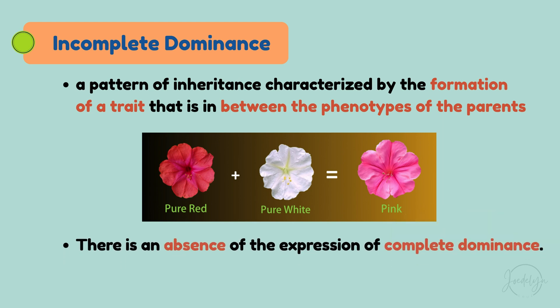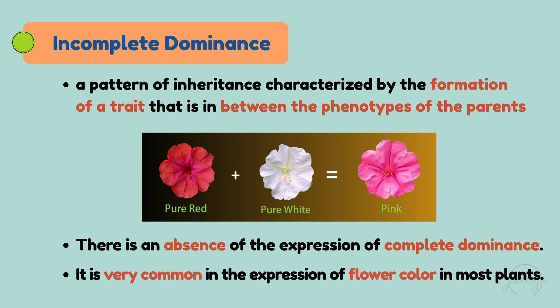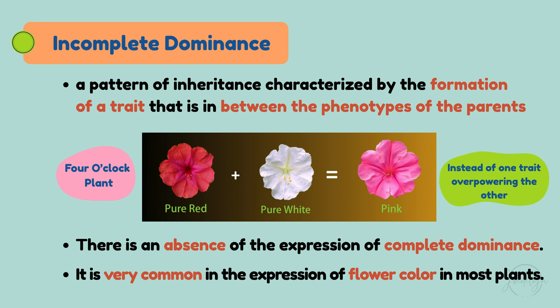There is an absence of the expression of complete dominance. This pattern is very common in the expression of flower color in most plants. A great example of this is seen in the four o'clock plant, where instead of one trait overpowering the other, the resulting third phenotype is something right in the middle.